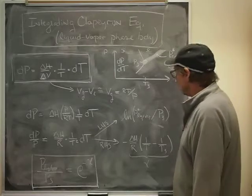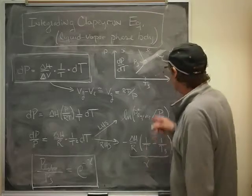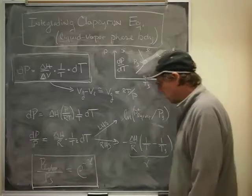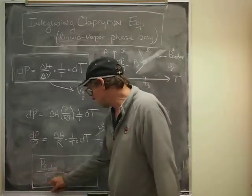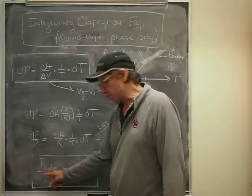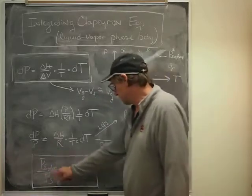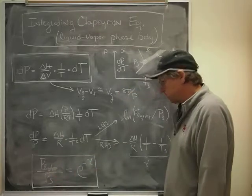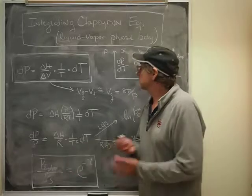What often happens is that one might want to multiply both sides of this by P3 so that you just have the phase boundary expression in terms of P3 and T3. And so that's pretty much that derivation.